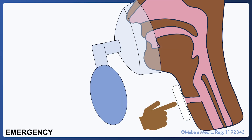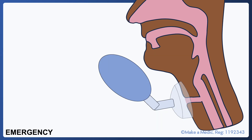If after all of these measures the patient is not breathing, the patient should be ventilated via the upper airways using a bag valve mask. The stoma should be covered to stop gas from escaping. If this is unsuccessful, ventilation should be attempted via the stoma. A pediatric face mask or a supraglottic airway device such as a laryngeal mask airway should be used to achieve the best possible seal around the stoma.